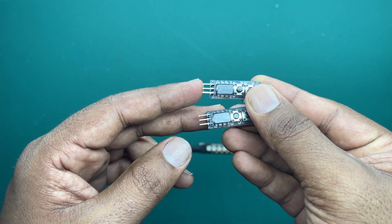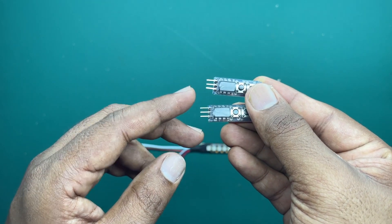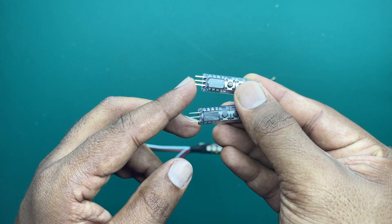The top one is ground and the middle one is plus five volts. And the last one, the third one, is data.